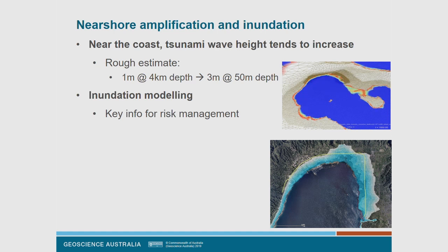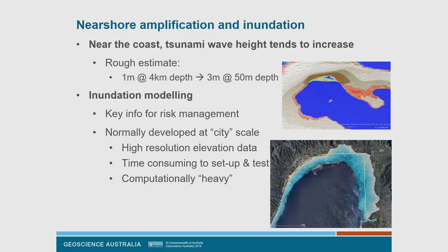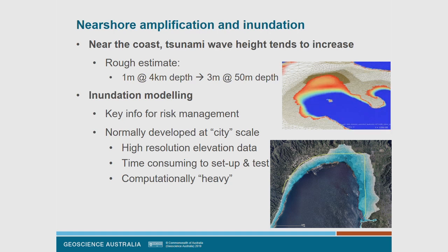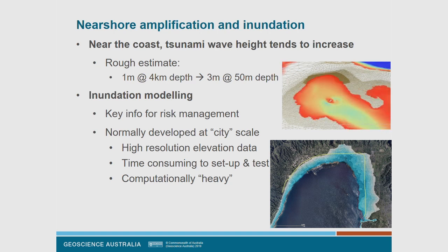Near the coast, wave height tends to increase. A heuristic: a tsunami about one metre high in four kilometres of ocean depth, propagated into 50 metres of depth, might be about three metres high. Taken onshore, some areas might have run-up of over 10 metres. We can understand this through inundation modelling, which is important for risk management — people want to know which areas might get wet. These models are normally developed at city spatial scales, tens of kilometres of coastline, because you need high-resolution elevation data and they can be computationally heavy.